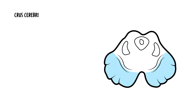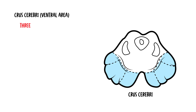The crus cerebrae is found at the most ventral area, the front of each cerebral peduncle, and contains three descending pathways. The descending pathway means from the brain, or the cerebral cortex, out and down through the brainstem — so these are usually motor information.